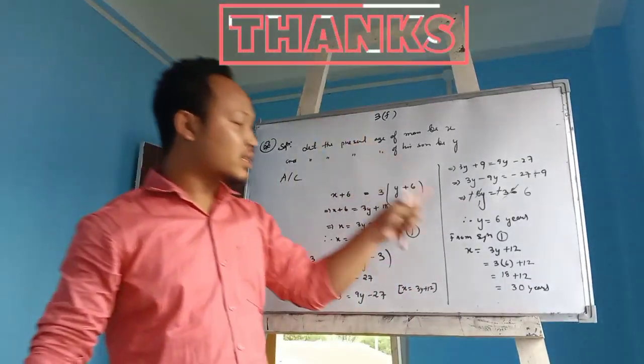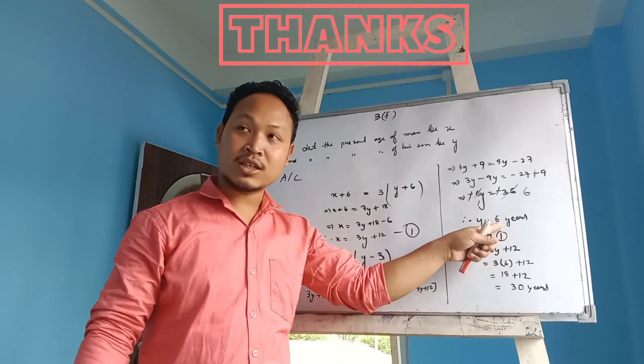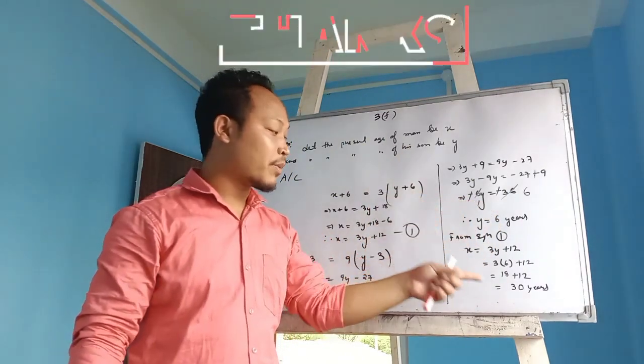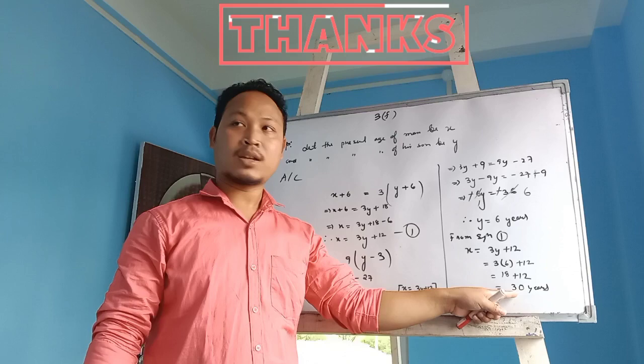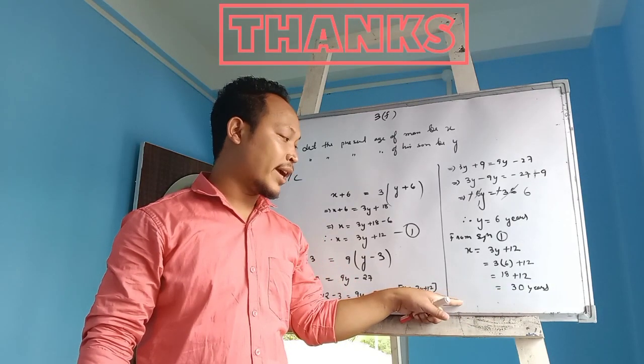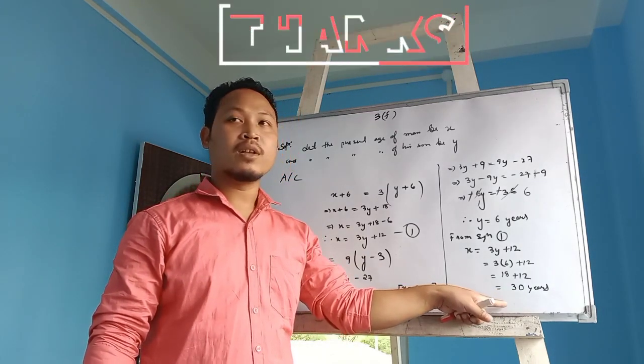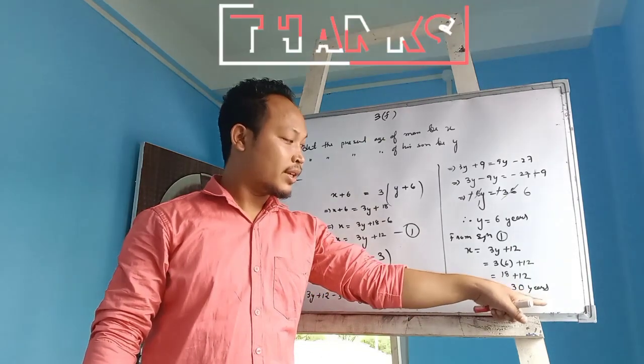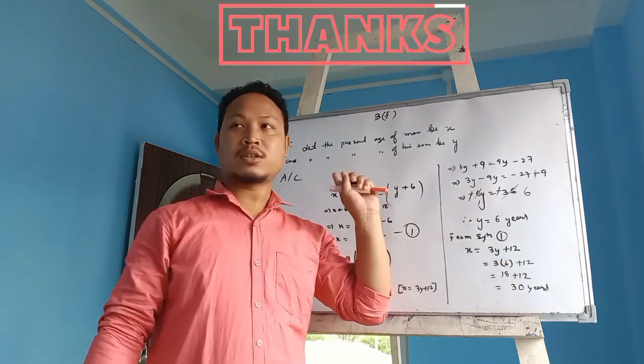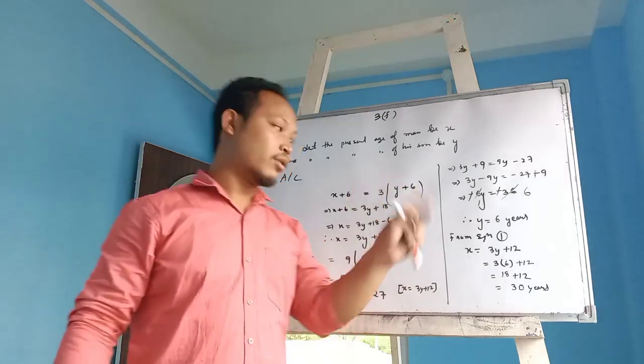So the present age of his son is 6 years and the present age of his father is 30 years. Hence, the present age of father is 30 years and the son is 6 years. Yes or no? Yes.